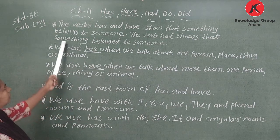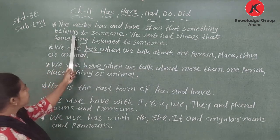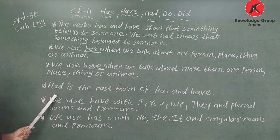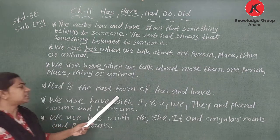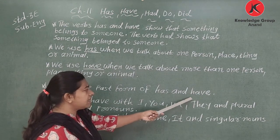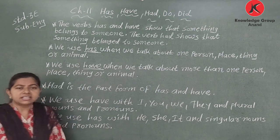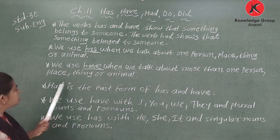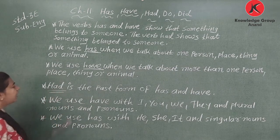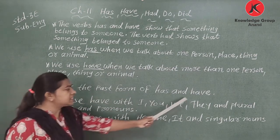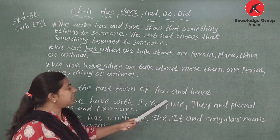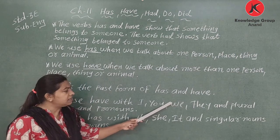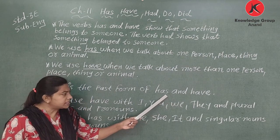Has and have show us that something belongs to someone — ownership. Had is the past form of has and have. Has and have we use in simple present tense.